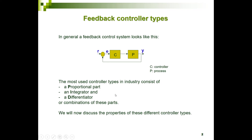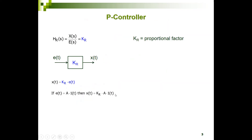We will now look into the properties of these different controllers. First, we start with a P controller, the proportional controller. The transfer function of a proportional controller is the output divided by the input, which is only a gain — the gain KR, which is a proportional factor. So we have a transfer function which is only a number, a gain KR.